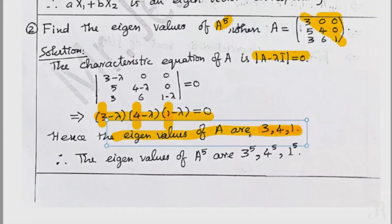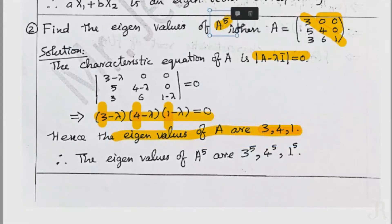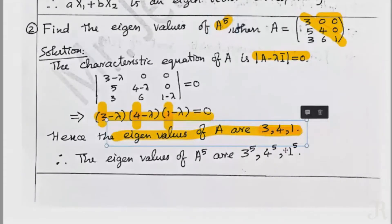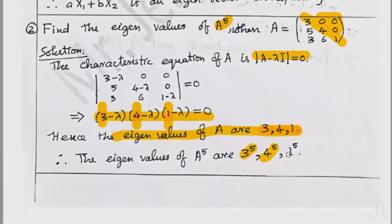Now, the eigenvalues of A are 3, 4, 5. We know that if lambda is an eigenvalue of A, then lambda to the power k is an eigenvalue of A to the power k. So for A to the power 5 (k equals 5), the eigenvalues of A^5 are 3^5, 4^5, and 1^5.